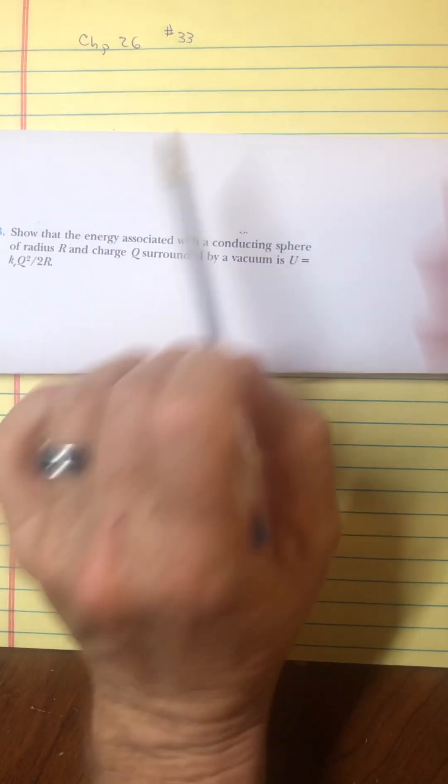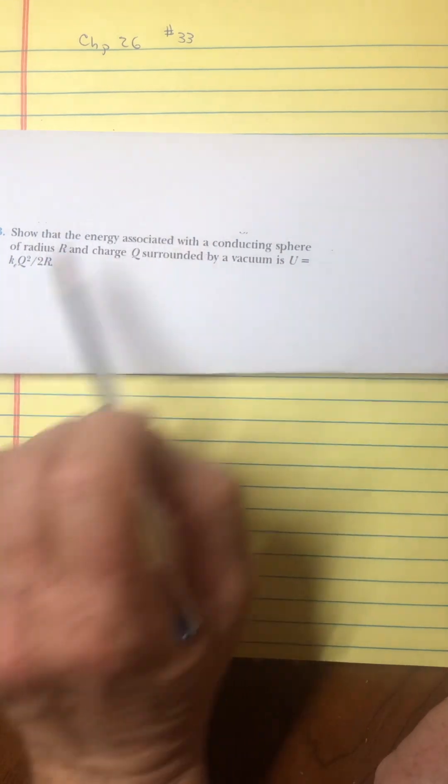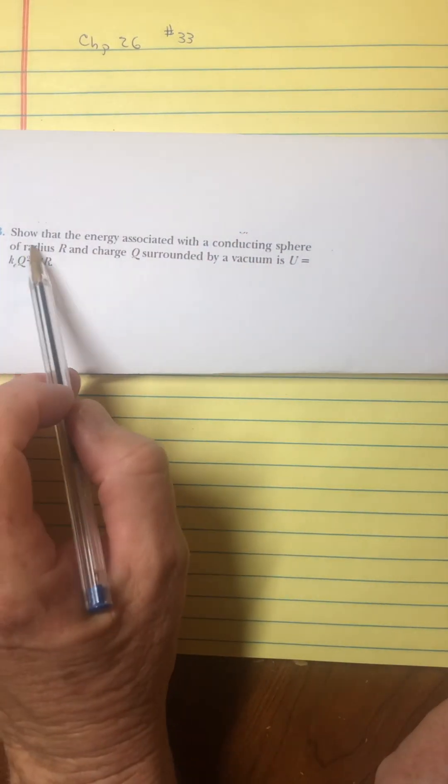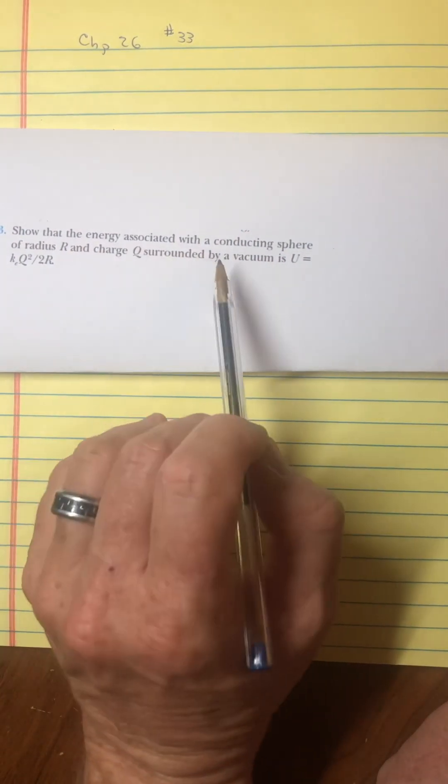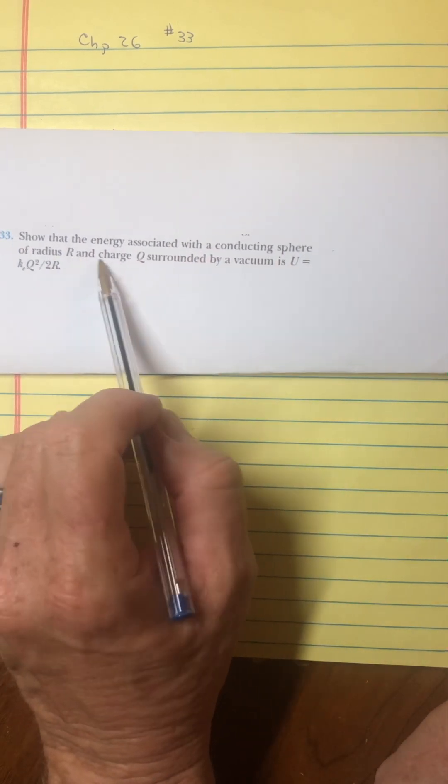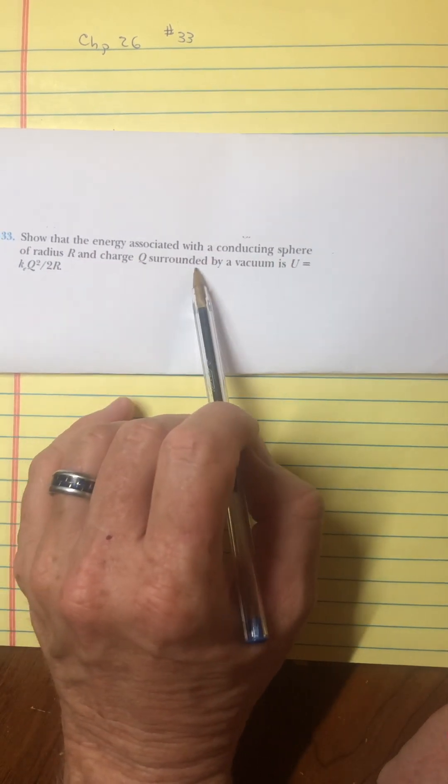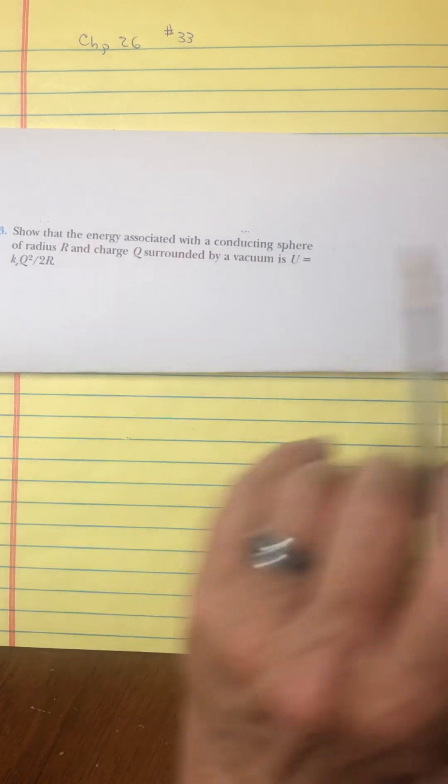Hey student, I got a great question here about number 33 from chapter 26. It says show that the energy associated with a conducting sphere of radius R and charge Q surrounded by a vacuum has this much energy.